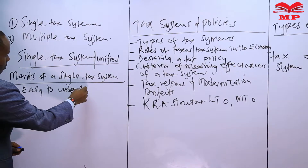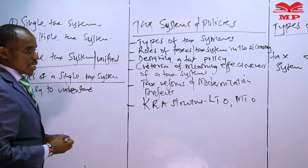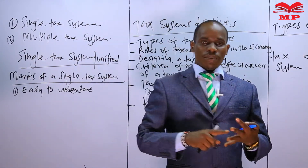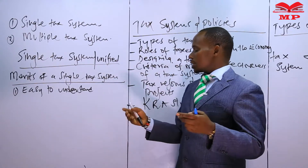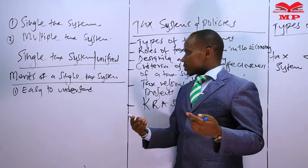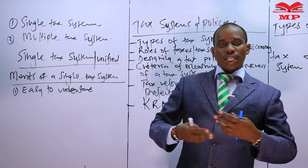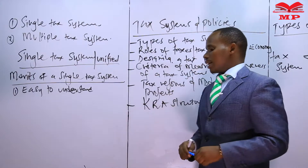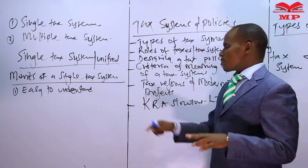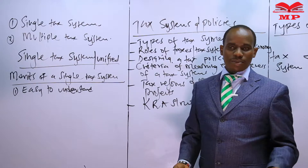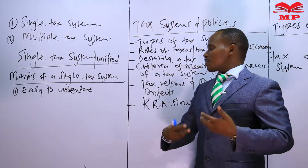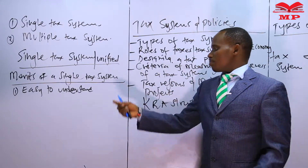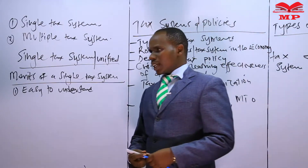It is easy to understand — easily understood by the taxpayers and also by tax officers. Tax officers handle tax matters and require something they can understand, so that they can work effectively and efficiently. Because only one tax needs to be paid, it will be easily understood by tax officers and taxpayers alike.